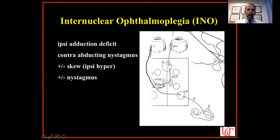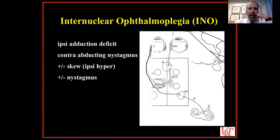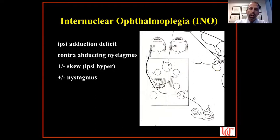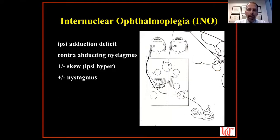An INO — internuclear ophthalmoplegia — is characterized by an ipsilateral adduction deficit and contralateral abducting nystagmus. There may or may not be a vertical misalignment; we call that a skew deviation when seen in association with an INO. Sometimes you will also see a conjugate, often torsional or vertical nystagmus in the setting of an INO. If you see that, you know there's a brainstem problem — it's not myasthenia mimicking an INO.